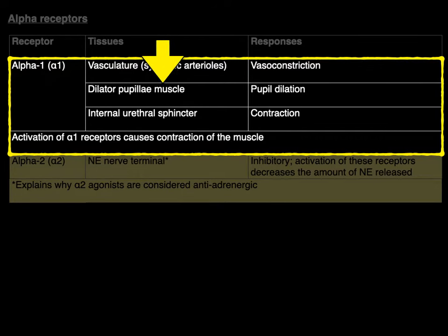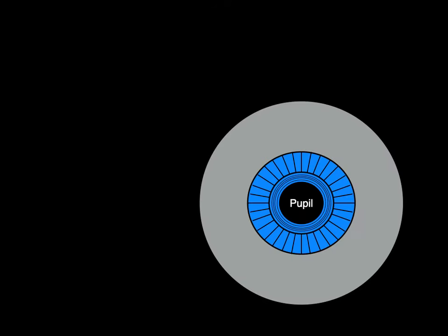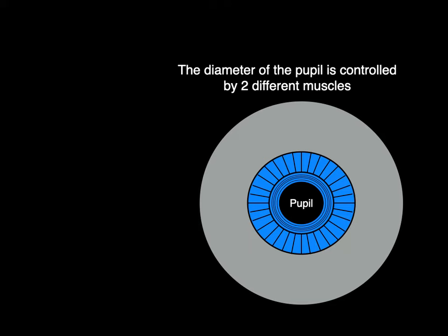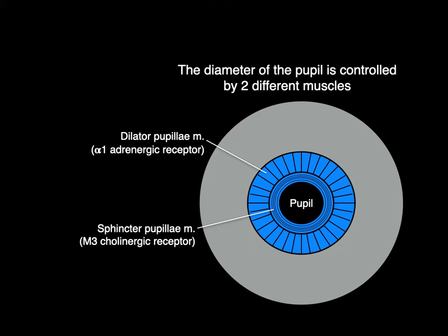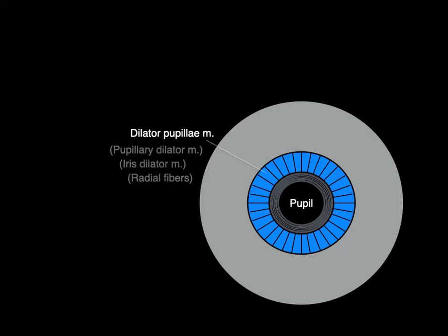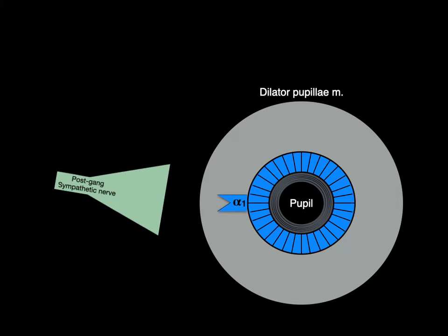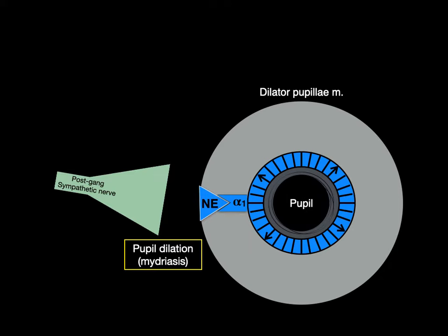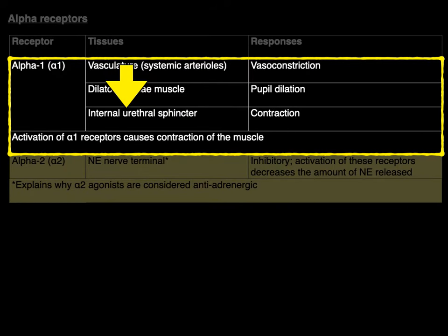Now let's talk about the dilator pupillary muscle. The diameter of the pupil is controlled by two different muscles: the sphincter pupillary muscle and the dilator pupillary muscle, also known as the pupillary dilator, iris dilator, or radial fibers. The alpha-1 receptors on the pupil dilator muscle, when stimulated by norepinephrine, cause pupil dilation, also known as mydriasis.